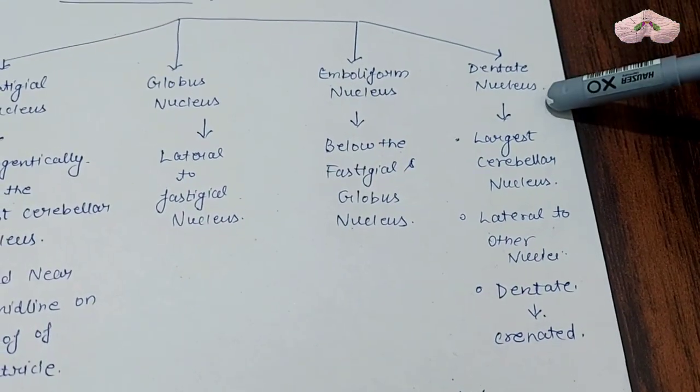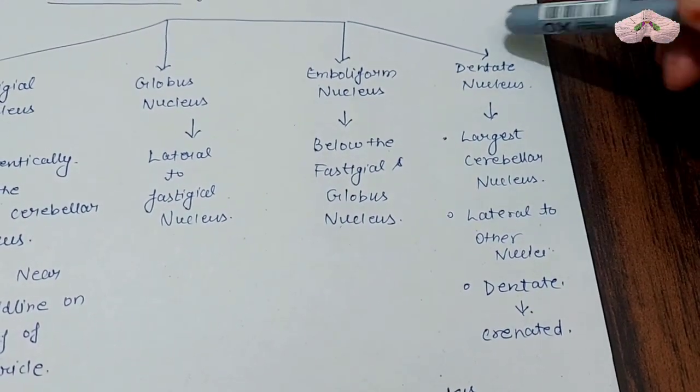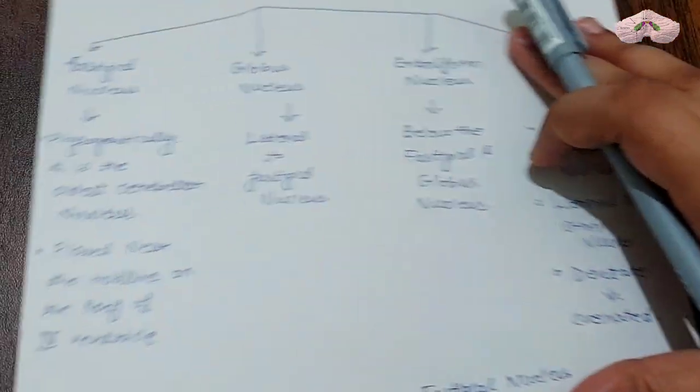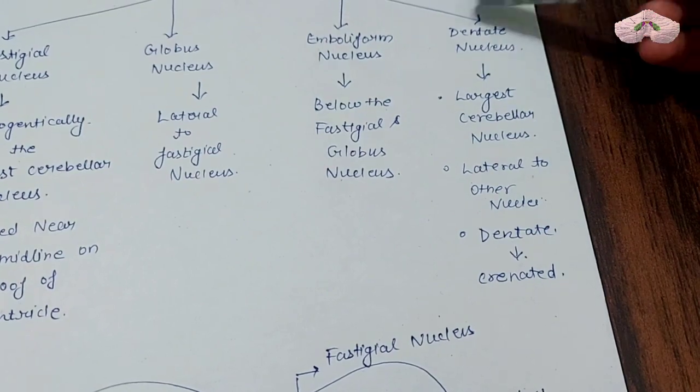The dentate is the biggest. The fastigial is medial, and the others are lateral to it. The dentate, because it is a crenated nucleus, we call it the dentate nucleus.